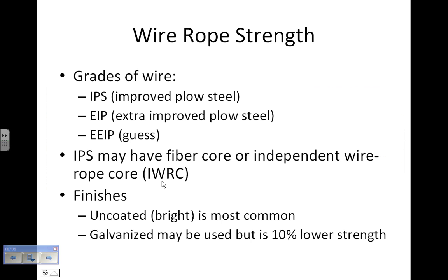There are different grades for strength. Plow steel is no longer used. The lowest grade now is improved plow steel, followed by extra improved plow steel. EEIP stands for extra extra improved plow steel. You can have either a fiber core or independent wire rope core for the improved plow steel.